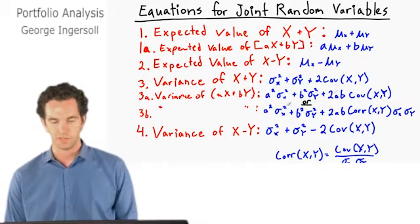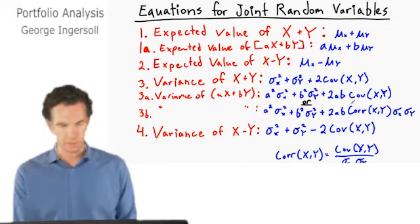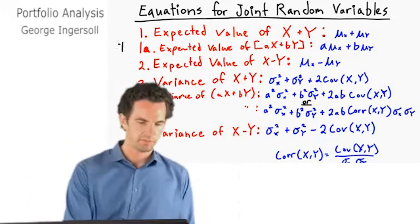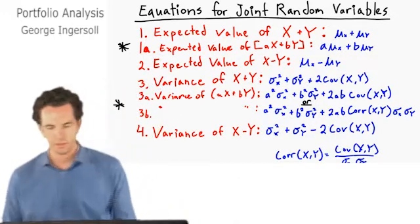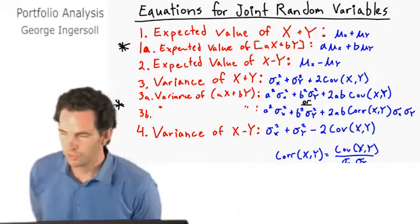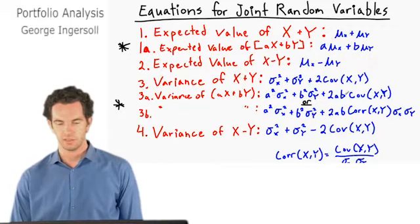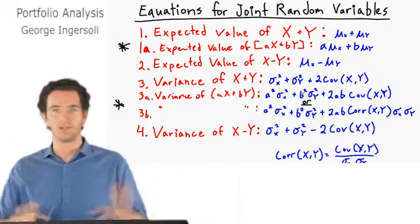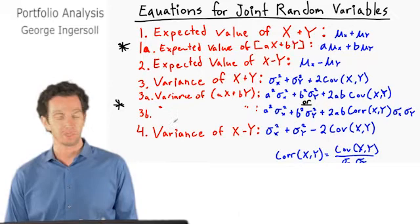These are really the equations you need. If you're dealing with a portfolio where you have one of stock A and one of stock B, these come out to the exact same things — just use A equals one and B equals one and it produces the same result for expected value or variance.